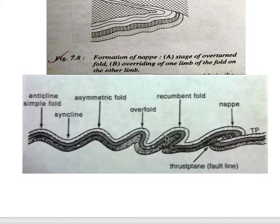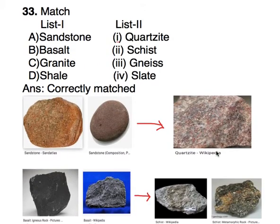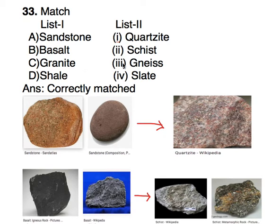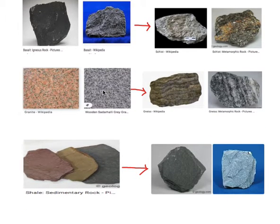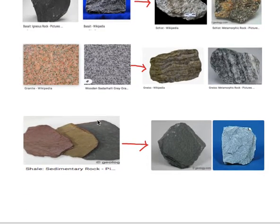When both limbs are parallel, they become horizontal, forming a nappe. The 33rd question is about matching the following, which has already been matched correctly. Sandstone under extreme pressure and temperature becomes quartzite; basalt becomes schist; granite becomes gneiss; shale becomes slate. Here are their pictures: sandstone→quartzite, basalt→schist, granite→gneiss, shale→slate.